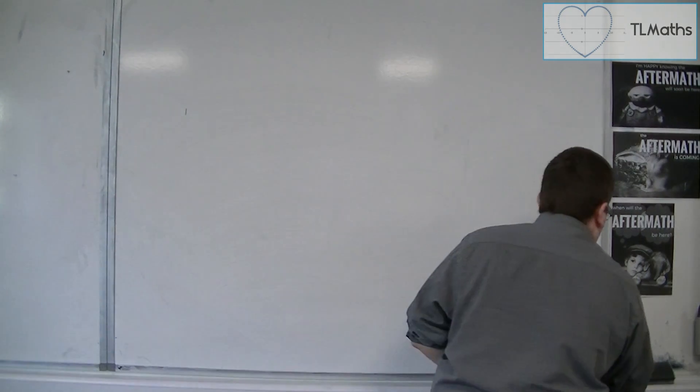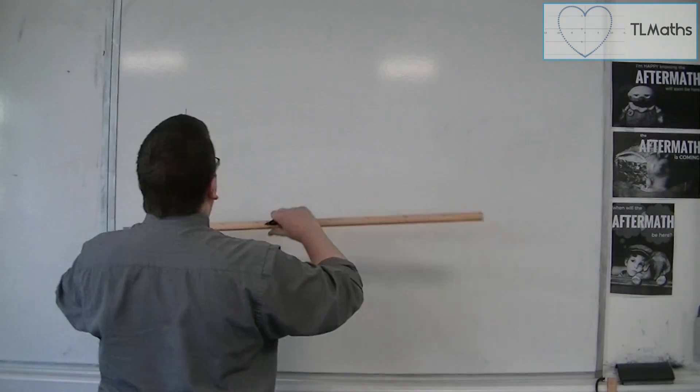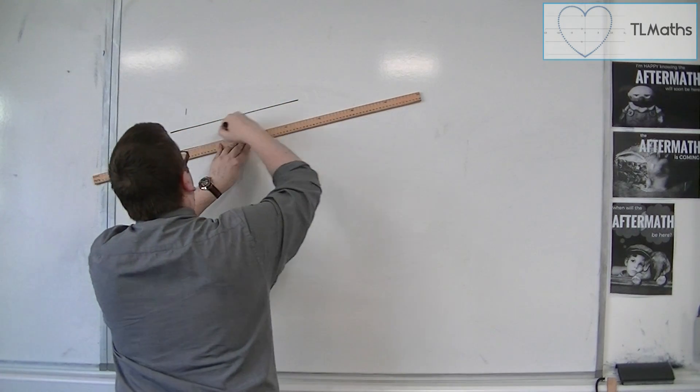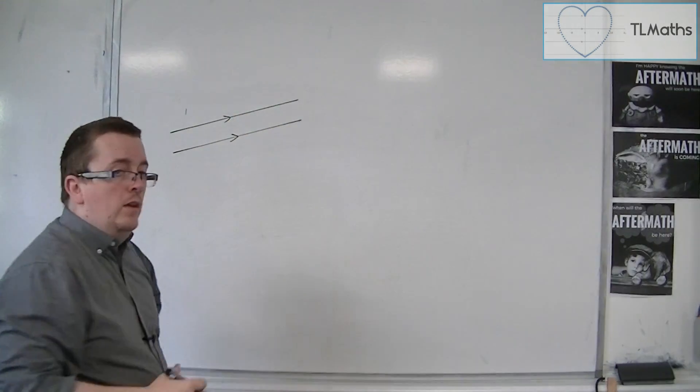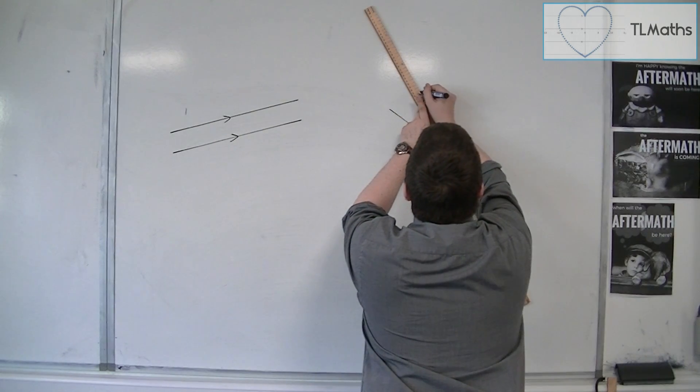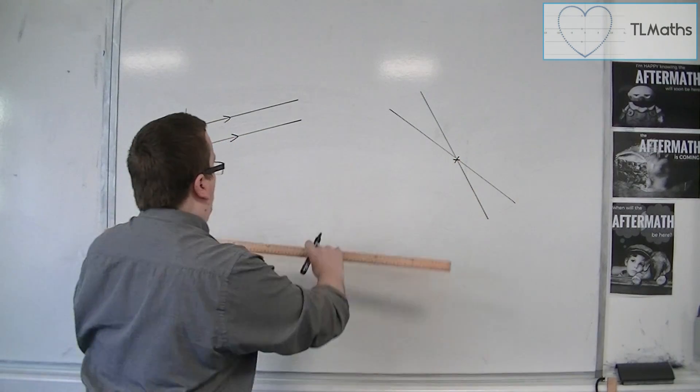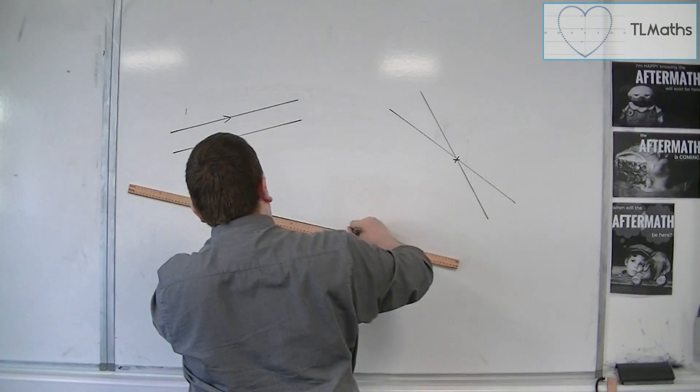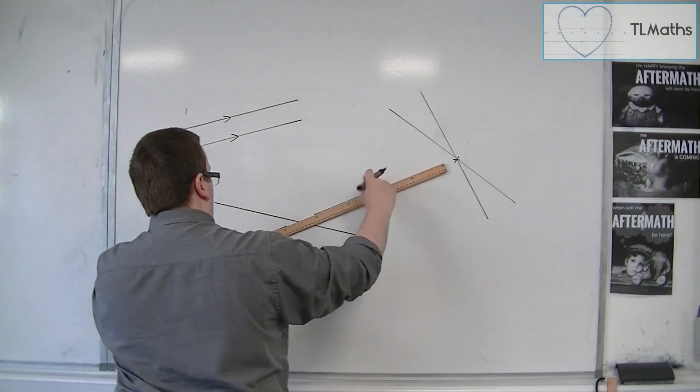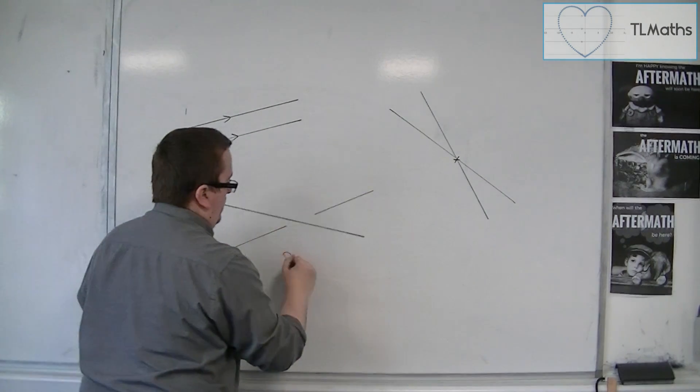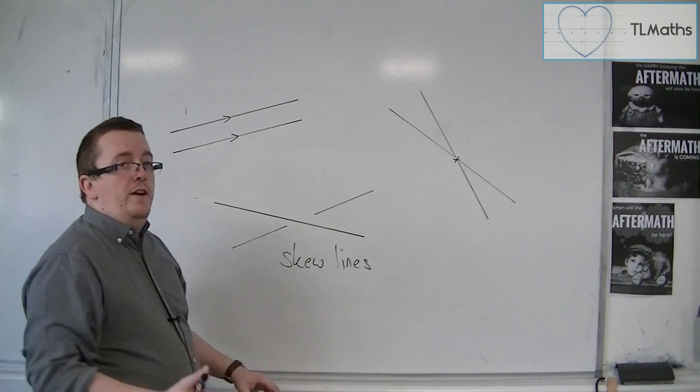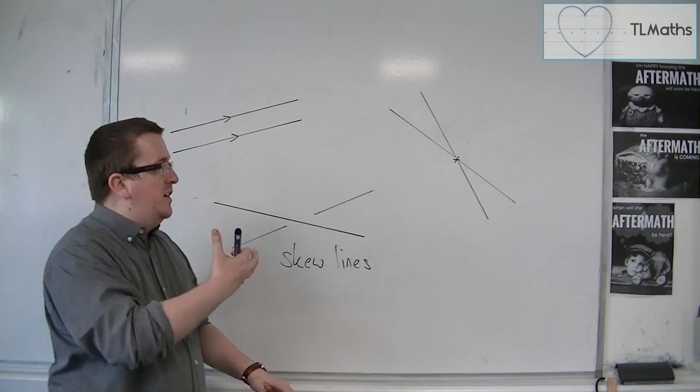So there are actually three possibilities that we need to know about. You either have this situation of two parallel lines, so they're either parallel, or the two lines actually intersect at some point, or you have two lines but they miss each other. Then these would be known as skew lines. So they are the three possibilities that we find in 3D. We're going to look at examples of each of these.